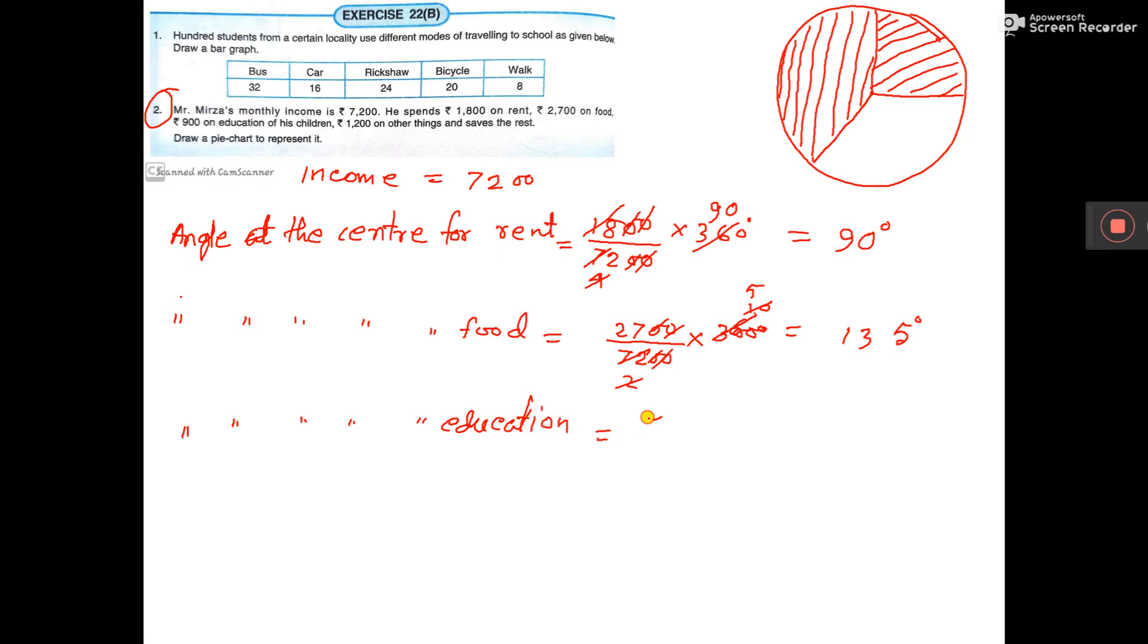Education is 900, so 900 by 7200 into 360.